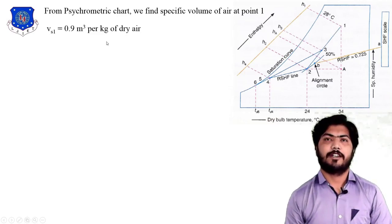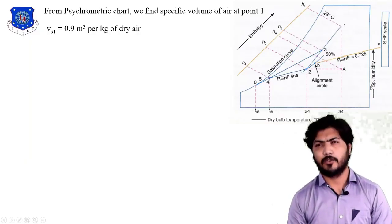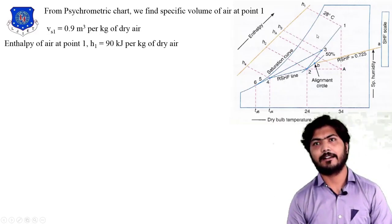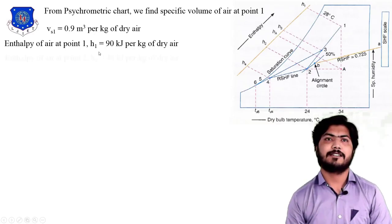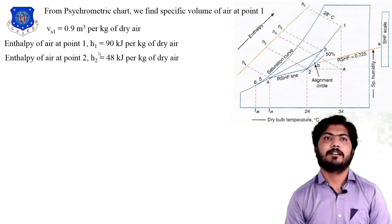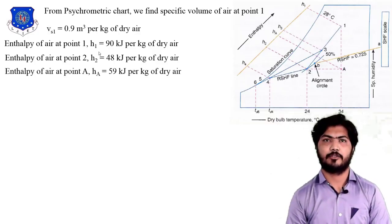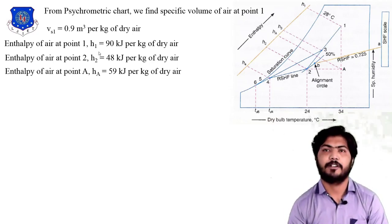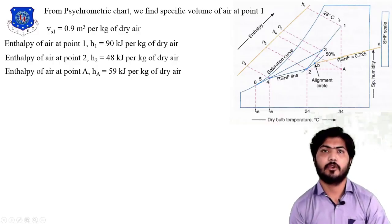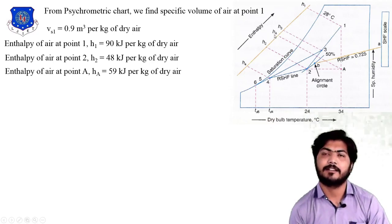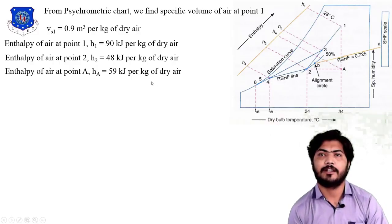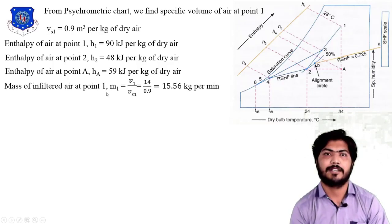From the psychrometric chart, the specific volume at point 2 is 0.9 cubic meters per kg of dry air. For point 1, we locate it on the psychrometric chart using the inclined specific volume line, giving 0.9 cubic meters per kg of dry air. The enthalpy at point 1 (H1) is 90 kJ/kg of dry air, enthalpy at point 2 (H2) is 48 kJ/kg of dry air, and the enthalpy at point A (HA) is 59 kJ/kg of dry air.